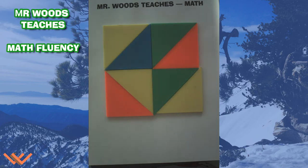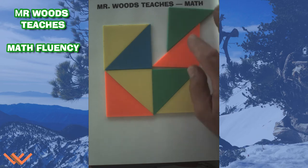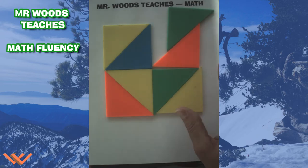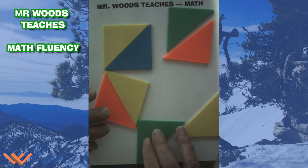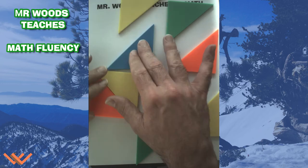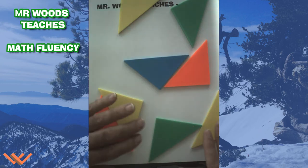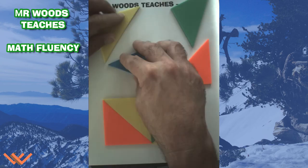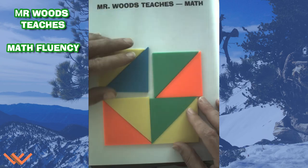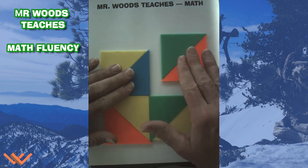So now we have this square. I want Jersey, Etsley, Andrew, and I to have equal shares. How do you think you can break that up? Take a moment to think about it, maybe pause the video. We have one for Jersey, one for Etsley, one for Andrew, and one for Mr. Woods. Then we can repeat that so we each have two pieces. If we put them together again, we can look at it as two, four, six, eight.